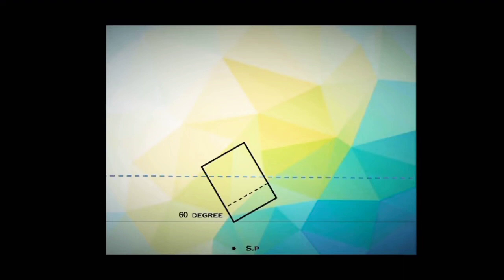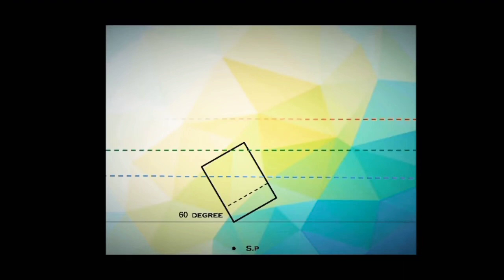Mark the stationary point — the distance of the stationary point from the plane depends on you. Mark the picture plane, ground level, and eye level, which were discussed in the previous video. The distance of the eye level is marked from the ground level, and this distance is given in the question.